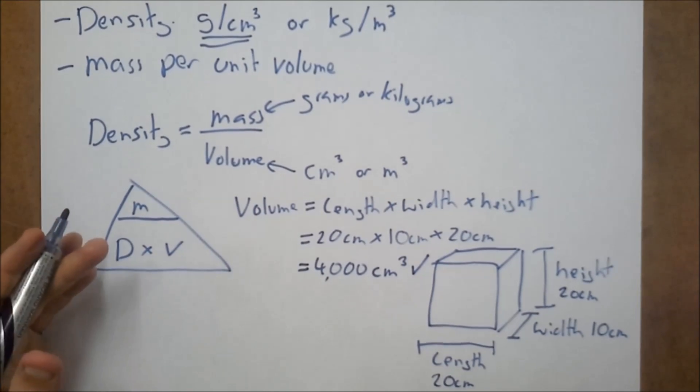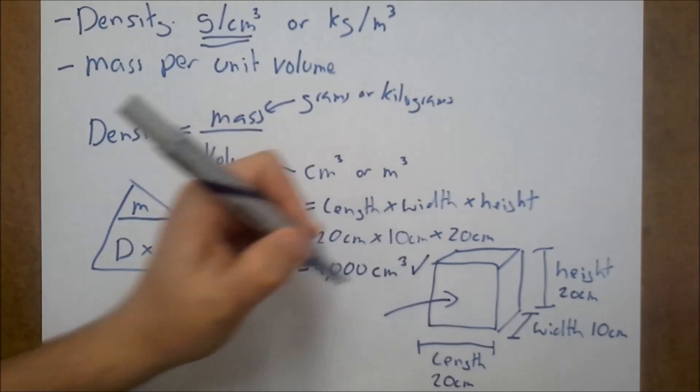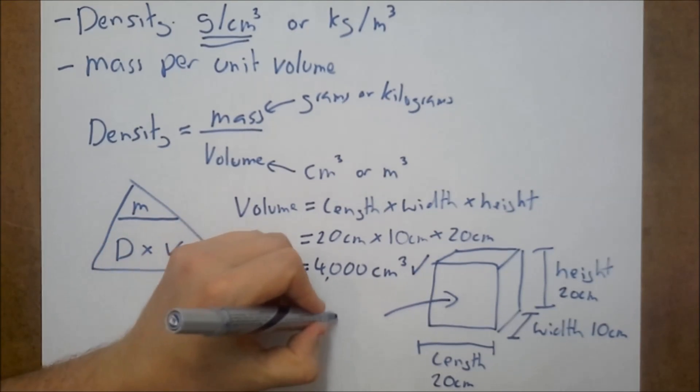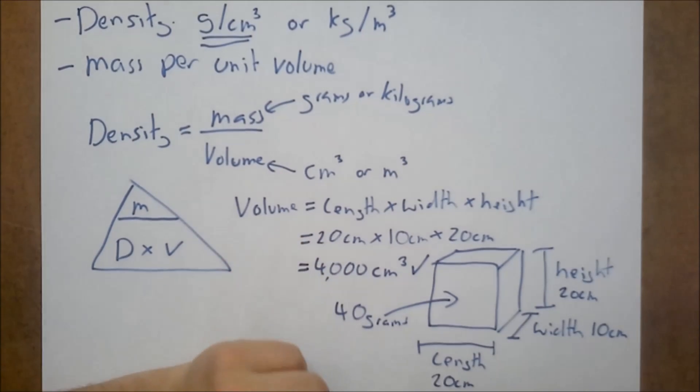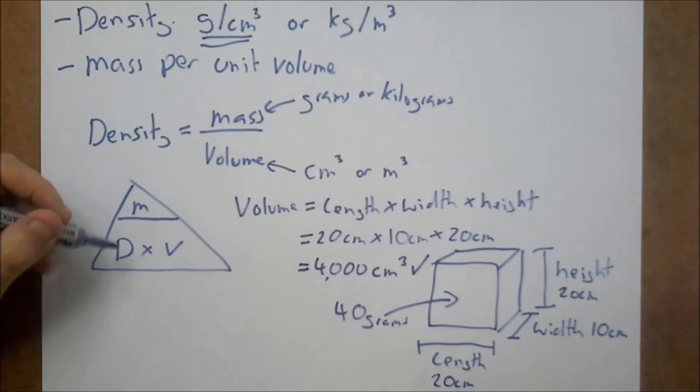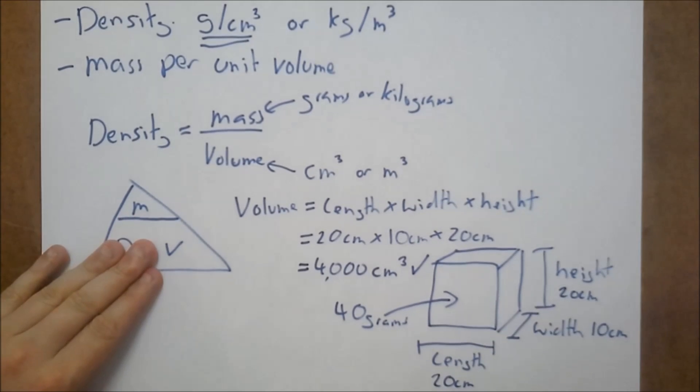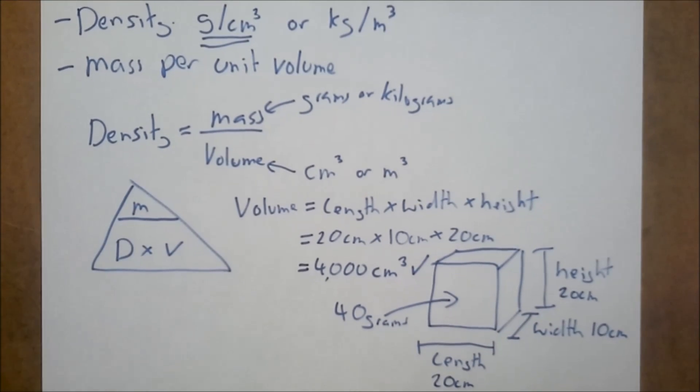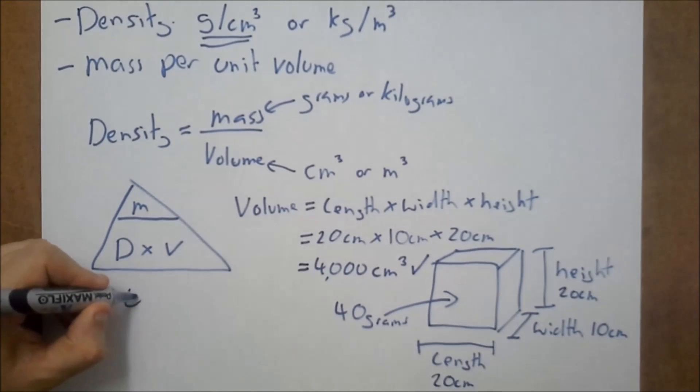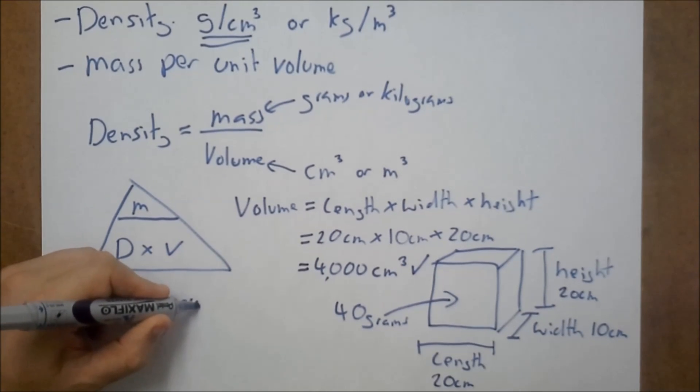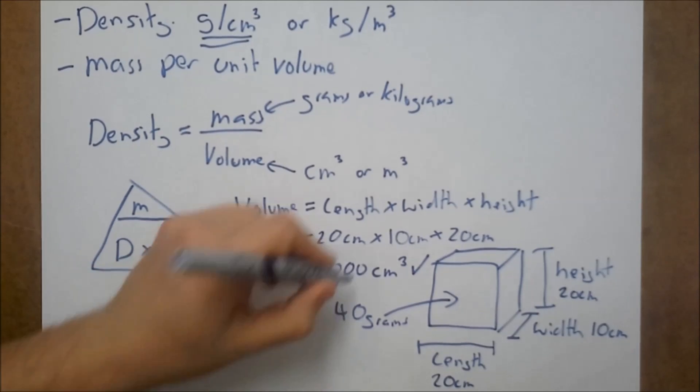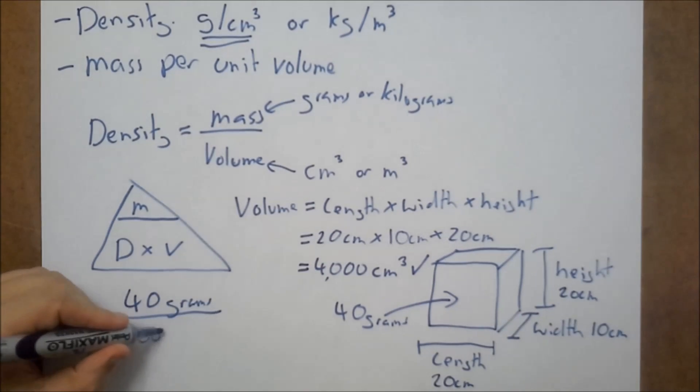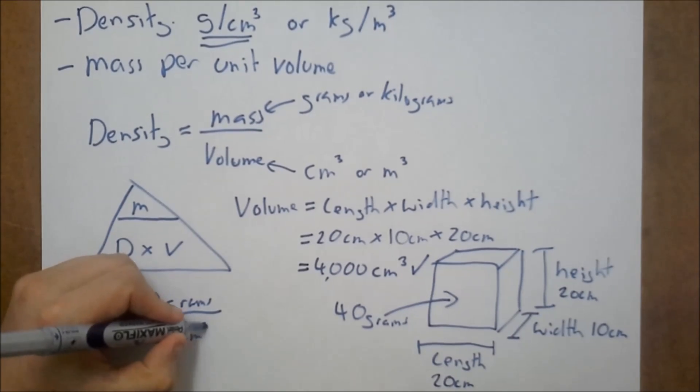But we still haven't found our density. Now let's imagine our material here is 400 grams. So going back to our triangle, we want to find out the density. So we're going to do the mass divided by the volume. So our mass is 400 grams.